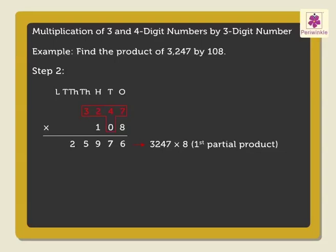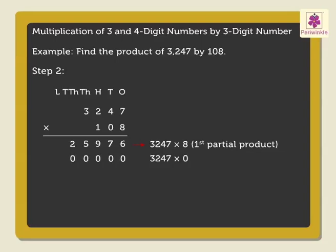Next, we multiply 3,247 by the tens digit of the multiplier, 108. As the digit 0 is in the tens place of the multiplier, we are actually multiplying 3,247 by 0. So we write a 0 below the digit 6 of the first partial product. Next, 7 into 0 is equal to 0. 4 into 0 is equal to 0. 2 into 0 is equal to 0. Then, 3 into 0 is equal to 0. So we get 0 as the second partial product.